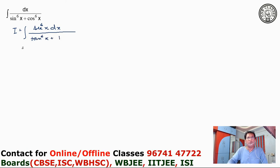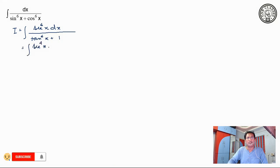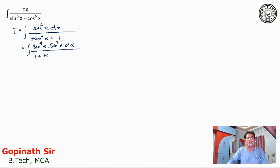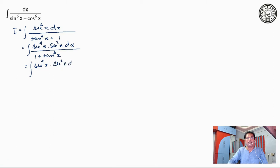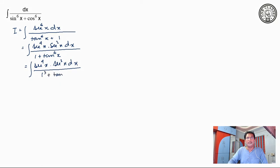Now, sec to the power 6x can be written as sec to the power 4x into sec square x, divided by 1 plus tan to the power 6x. So we have sec to the power 4x into sec square x dx divided by 1 cube plus tan square x whole cube.